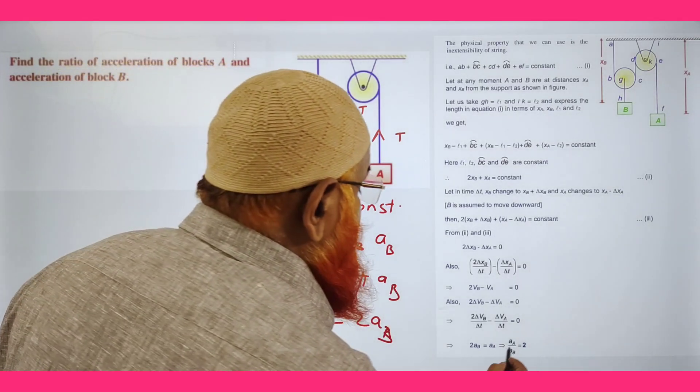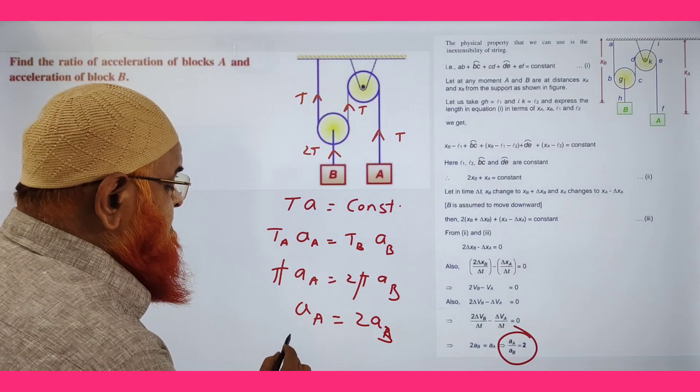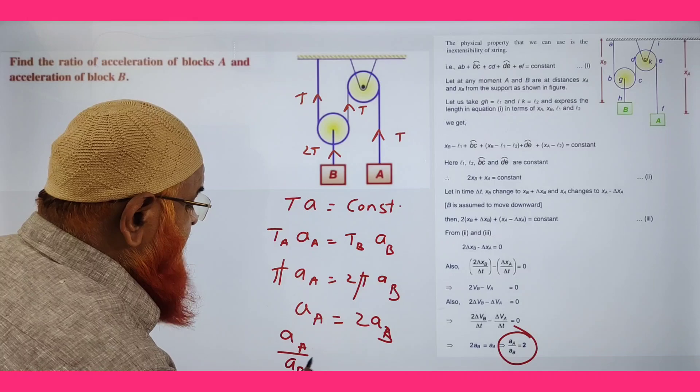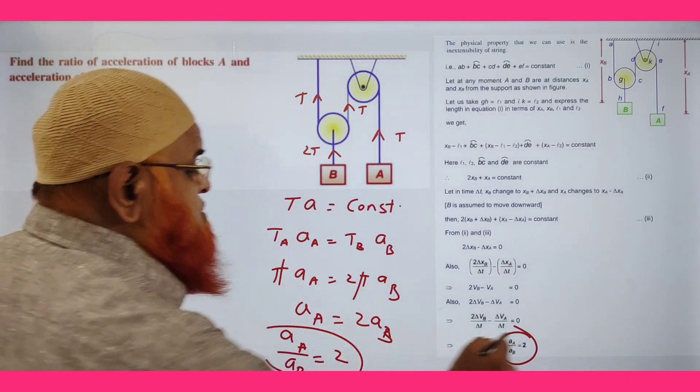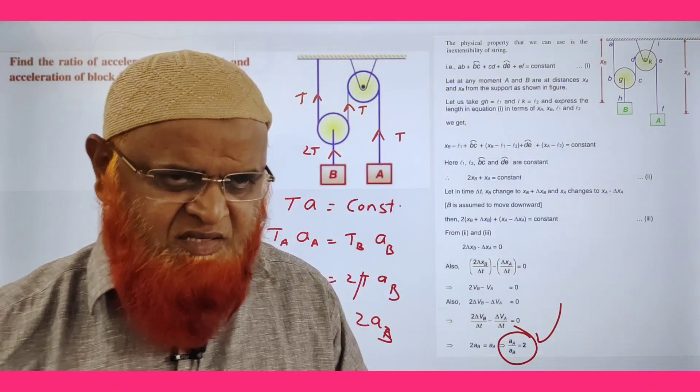So acceleration A equals 2 times acceleration B here. That means acceleration of A divided by acceleration of B is 2. So simple and very lovely method this is.